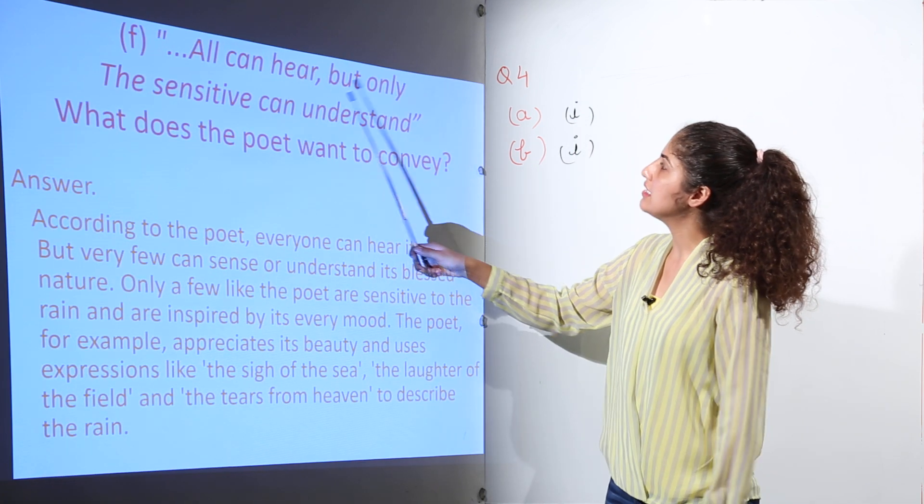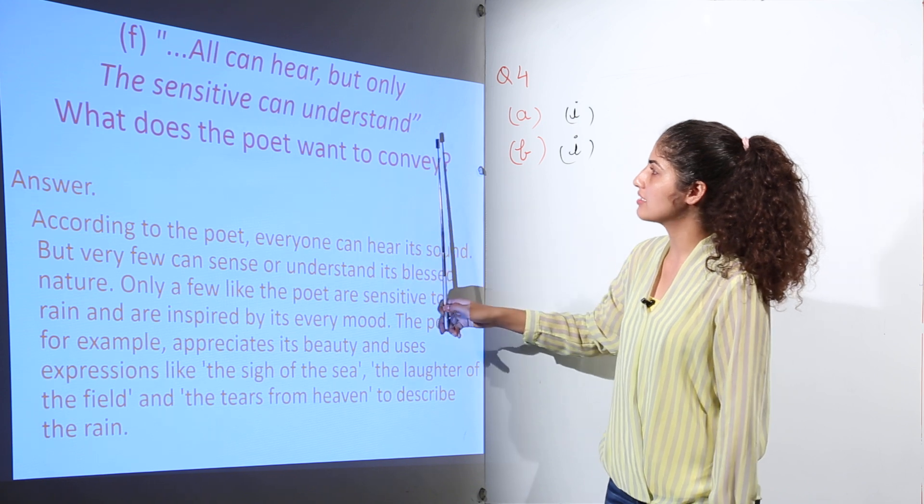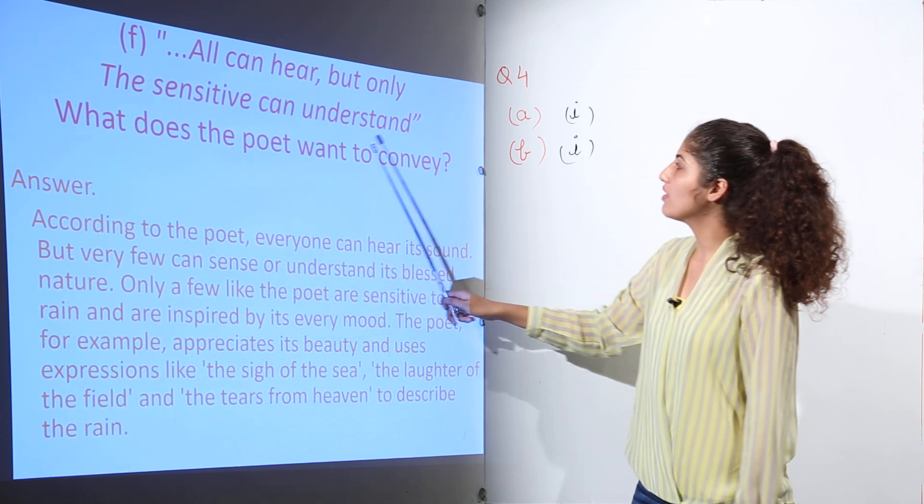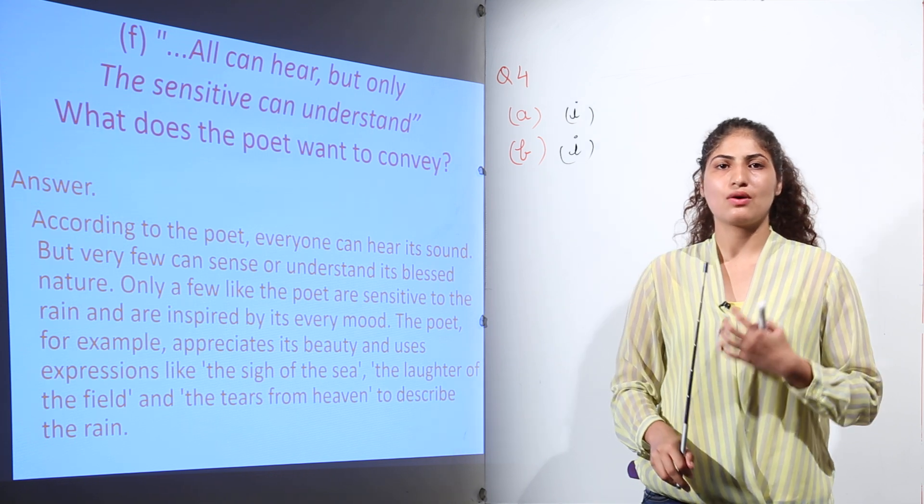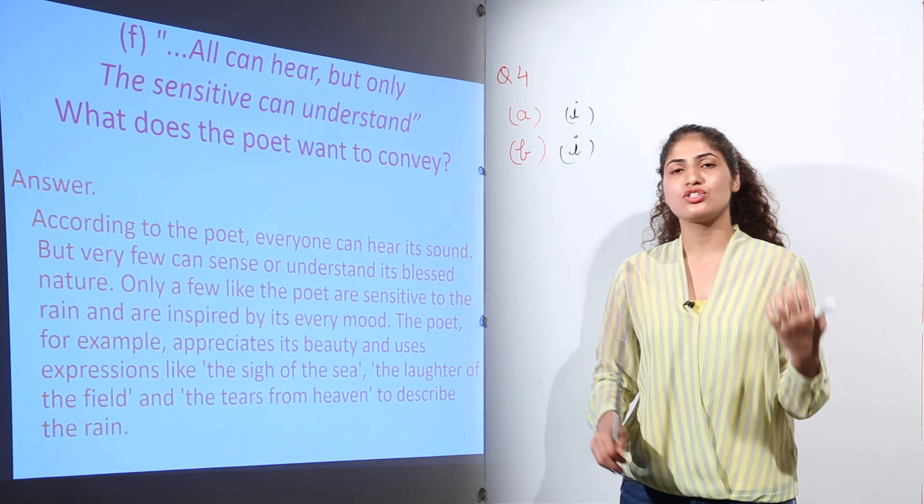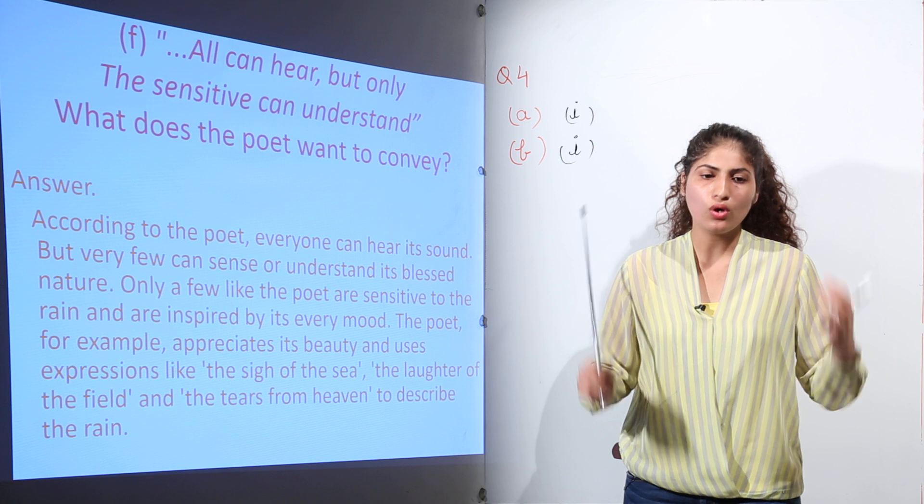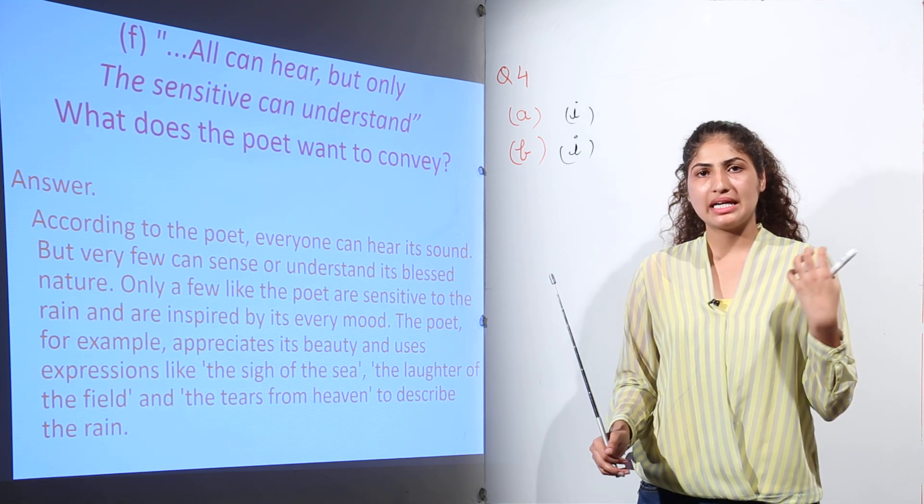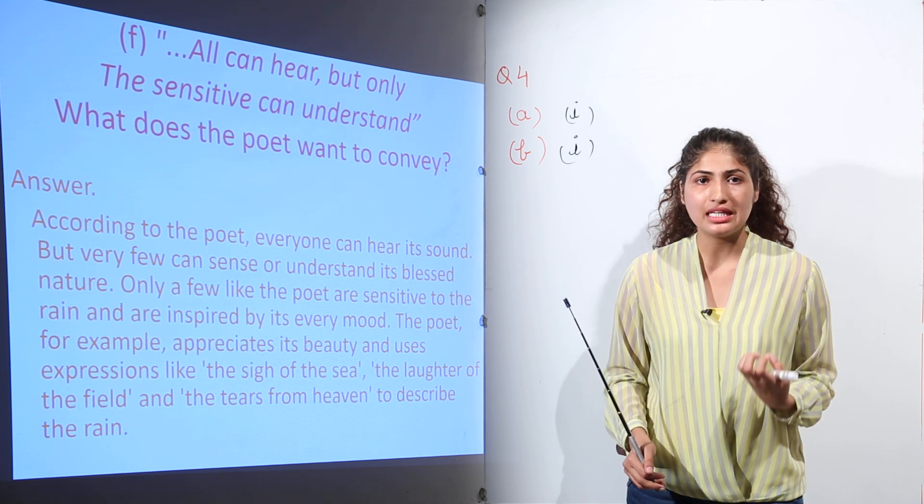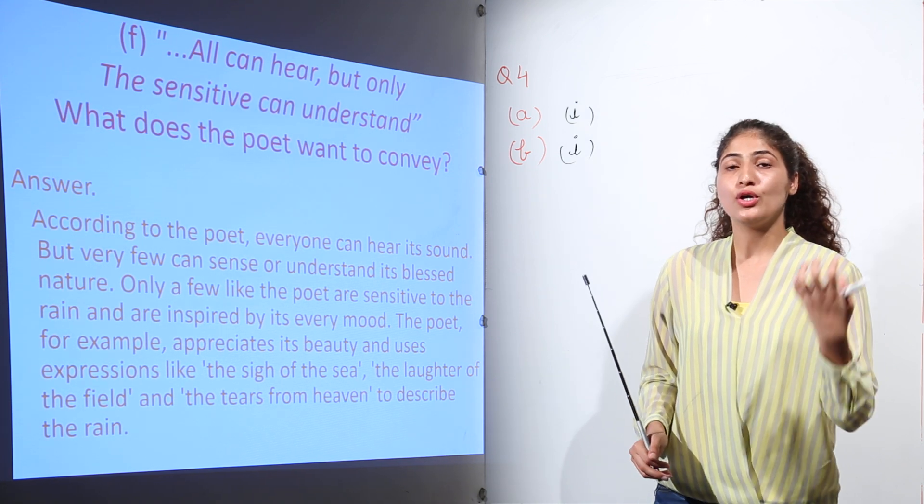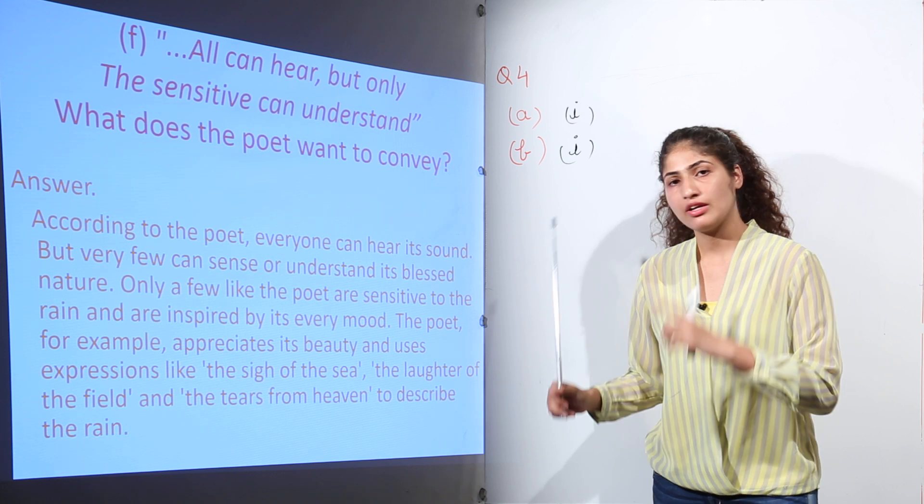Next question: All can hear, but only the sensitive can understand. What does the poet want to convey? It means that when rain falls on the household, on the windows of each household, we all know that there is rain. But very few, very emotional, very reactive persons can feel the sound, can feel the music of the rain.